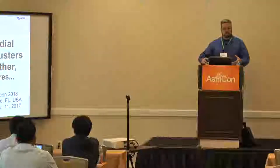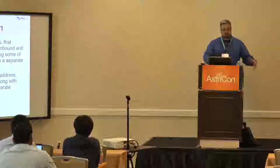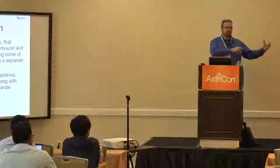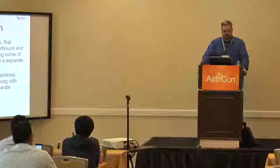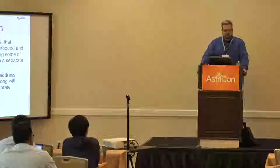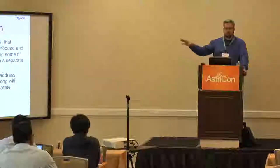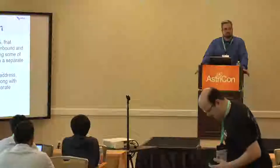That's how we have clusters, and when you have clusters, sometimes you want clusters to talk to each other. The first half of this presentation is about how we were able to get clusters to talk to each other easily. This was actually for a charity campaign for one of our clients. You have a separate fronter cluster — a main web server, main database server, a couple of web servers, maybe a few VICIdial telephony servers depending on scale. Several clients send calls from their fronter or qualification agents through to a verification cluster, which is a separate cluster with a different database, different users, and different lead base.